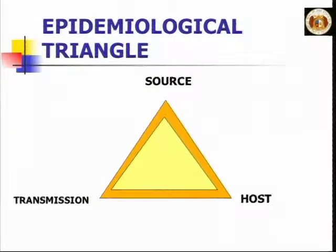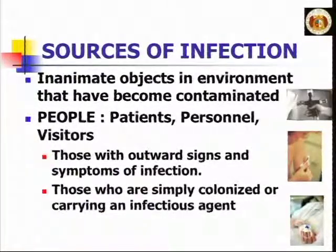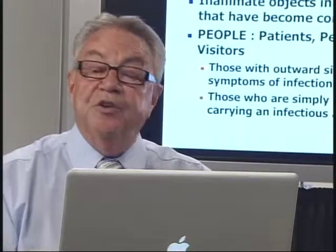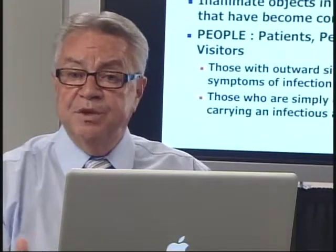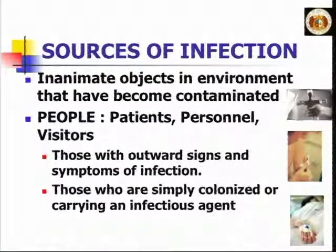The source of infection can be inanimate objects in the environment that have become contaminated, whether it's medical equipment or surfaces in the room commonly touched by caregivers. But by far the number one source of infection in healthcare are people — and not those with outward signs and symptoms of infection. Most transmission occurs from patients who are simply colonized or carrying an organism without any signs or symptoms. Much of what we've done in the past is target the patient with known infection, without paying attention to the colonized person who may be carrying an organism.